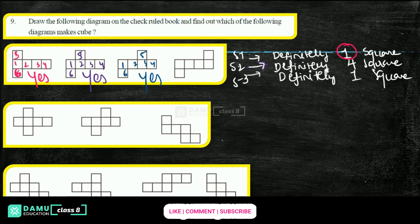Next one: here one, two, three, four in the middle, top five, down six — yes, it is also possible. And the following one: is that making a cube or not? Yes, obviously it is — one, two, three, four, then five and six — yes, it is possible.